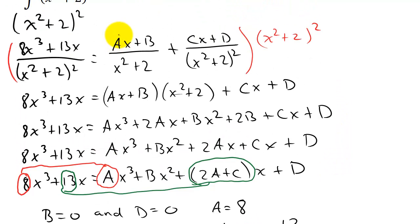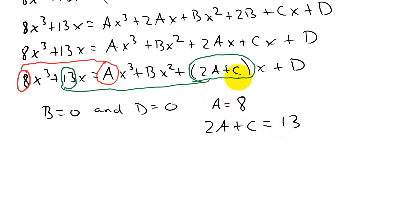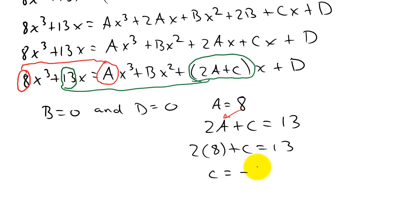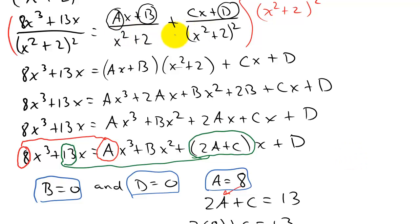I know a, b, and d — the only unknown is c. I have the equation 2a plus c equals 13, and since a is 8, I get 2 times 8 plus c equals 13, which gives c equals negative 3. So now I have all four variables: a equals 8, b equals 0, c equals negative 3, and d equals 0.